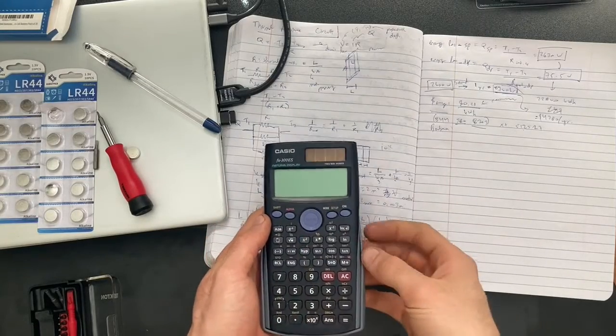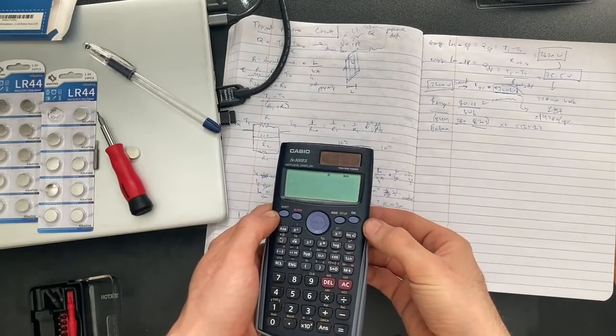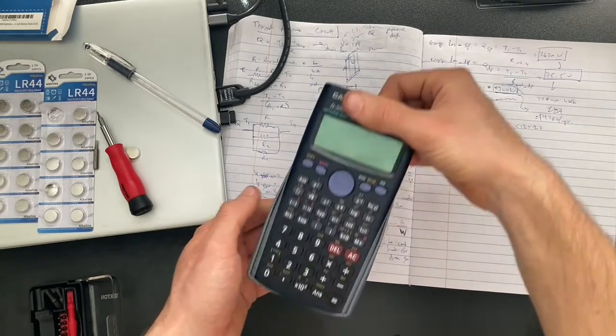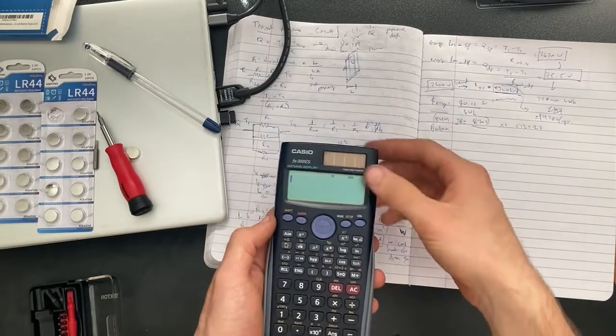In this video we're going to be replacing the battery in this Casio calculator. The issue is that when I turn it on, it has a little bit of juice, but if I cover up the solar panels it dies pretty quick. I'm going to replace the battery and hope that fixes it.